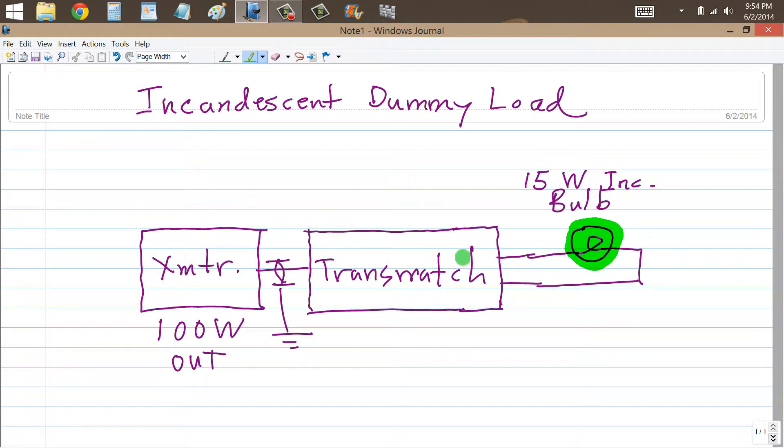And if you get it up to about 15 watts, it should glow at about the normal intensity that you would expect a 15 watt bulb to glow at. As you further increase the power, you're going to have to do it gradually and you can adjust this transmatch to keep the SWR down.